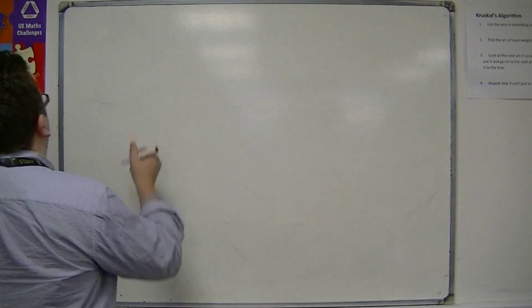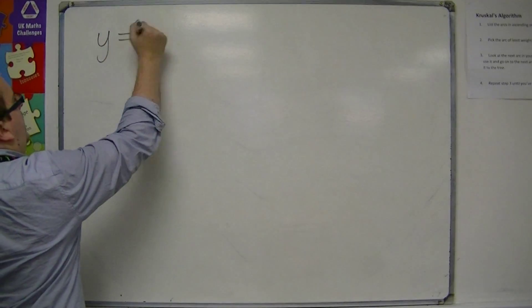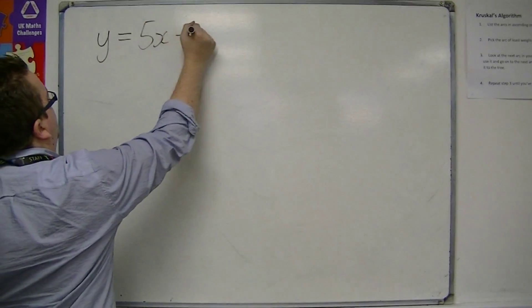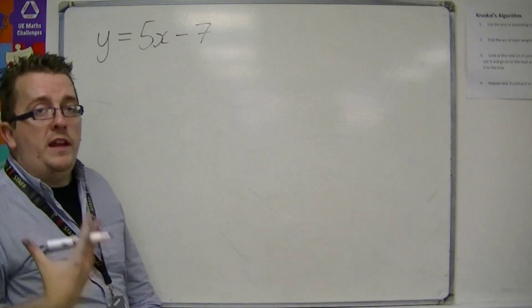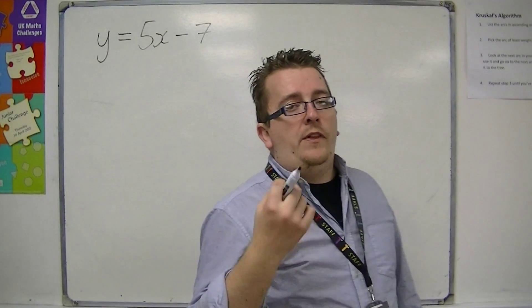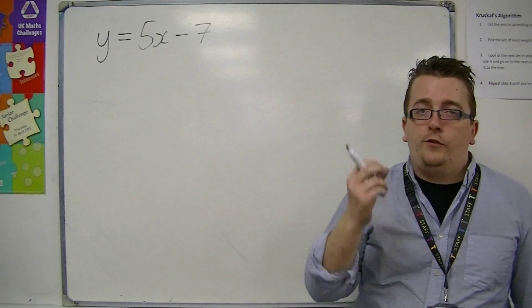So if I write down a graph like this, then you would instantly be able to tell me that the gradient of this line is 5.